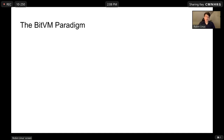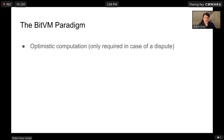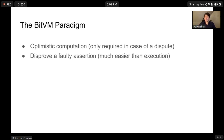Now the BitVM architecture. The programming paradigm of BitVM is an optimistic computation paradigm. One party makes a claim — they say the result of the computation is Y. If that value is correct, everybody agrees and nothing happens; it just looks like a regular transaction. Only in case of a dispute, when the result is incorrect, do you start the entire BitVM to disprove the result. Disproving a computation is much easier than executing the entire computation.